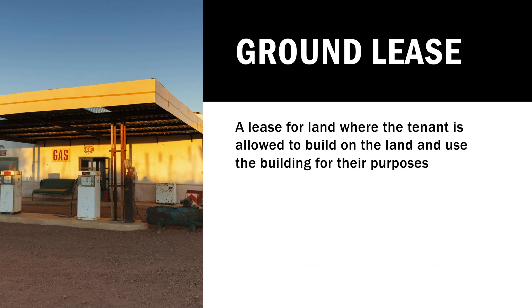G for ground lease. They're leasing the ground — leasing the land. This is where a tenant will lease just the land and then build on it. They're paying the landowner rent every month and using whatever structure they built for their purposes, usually business. These leases are usually for a long period of time, sometimes 20 or 30 years. When that's over, they could renew or move on. In a ground lease, the tenant is responsible for maintenance, taxes on the structure, and all other upkeep. The owner of the land is just collecting their rent.